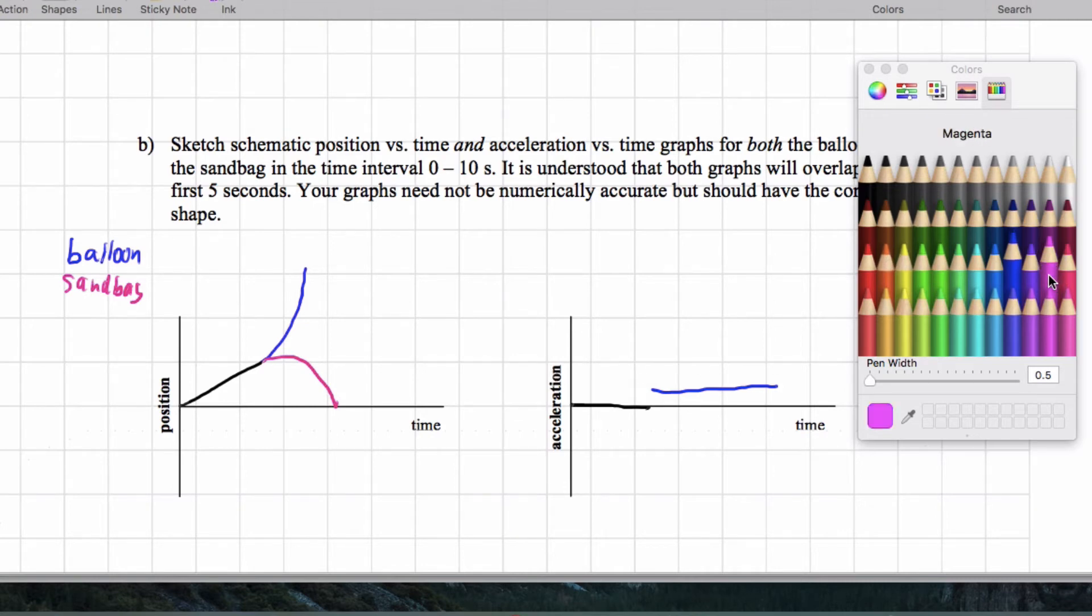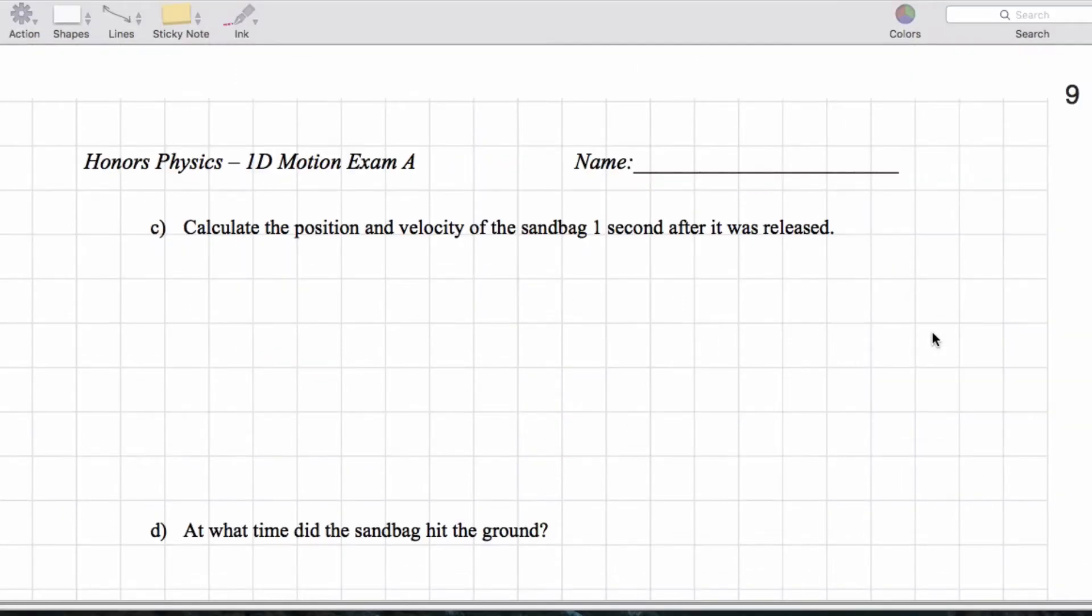So the balloon acceleration at 5 seconds is going to be 2 meters per second squared. And for the balloon, it's going to be negative 10. Sorry. For the sandbag, it's going to be negative 10 meters per second squared, like this. So this will be negative 10, and this will actually be 2 right here from the slope.